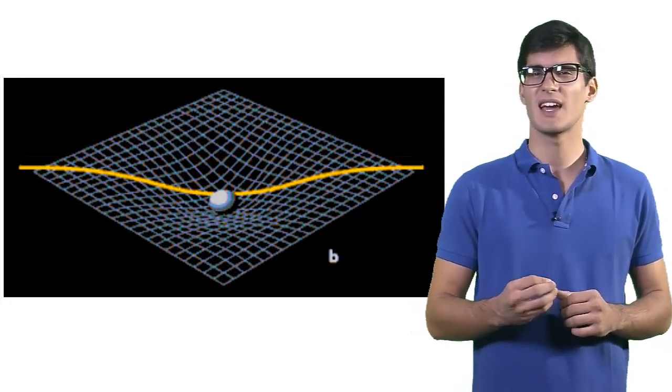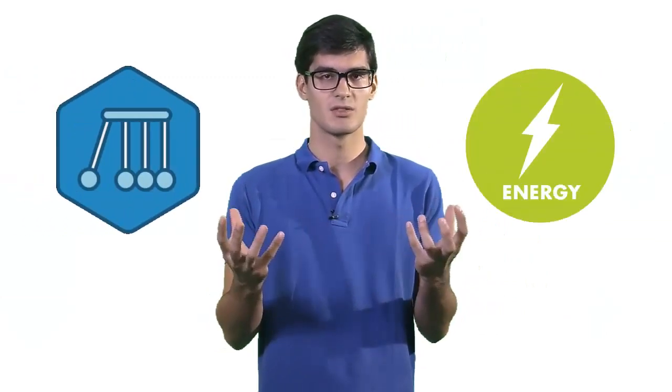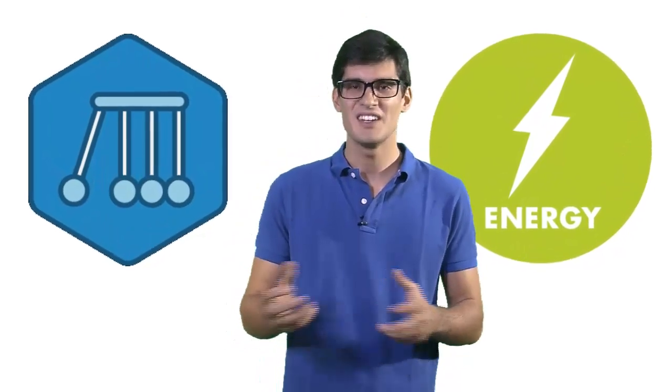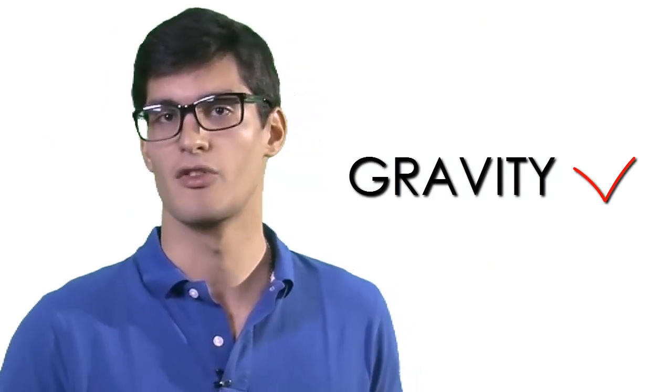You may ask what exactly causes this curvature? Einstein's answer is simple. Energy and momentum of all matter and radiation. Any type of energy and momentum would cause space to curve, even the very energy and momentum of gravity.